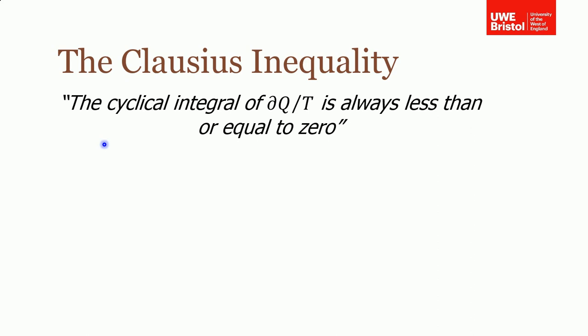In the last section of this lecture, I'm going to talk about the property of entropy — how it's derived and its implications. The property of entropy is based on the Clausius inequality, which states that the cyclical integral of the change of heat with temperature is always less than or equal to zero.